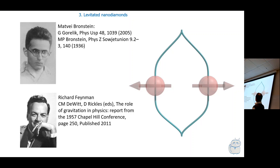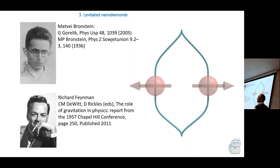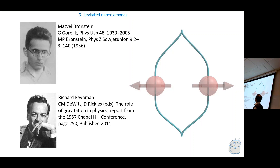Here's a macroscopic superposition scheme — a Stern-Gerlach cartoon. The nanodiamond starts at the top with a single nitrogen vacancy spin. If we put that spin into a superposition of two different spin states and apply an inhomogeneous magnetic field, there's a Stern-Gerlach effect where the diamond goes into a superposition of being in two places. If we can reverse the trajectory and bring the two superposition components back, we would be doing matter wave interferometry. This is done with atoms and BECs, but doing it with a nanodiamond with ten billion atoms is beyond the current state of the art.